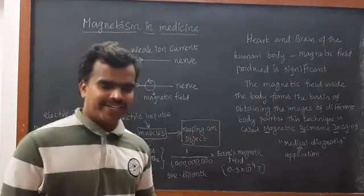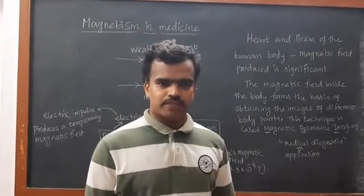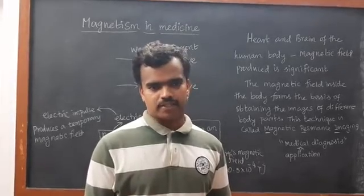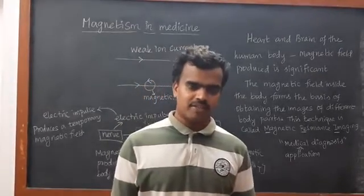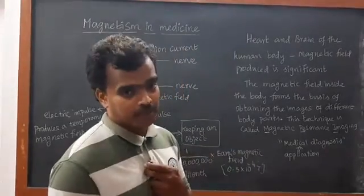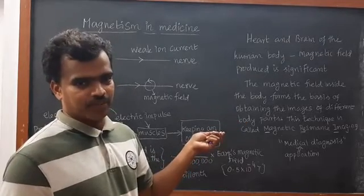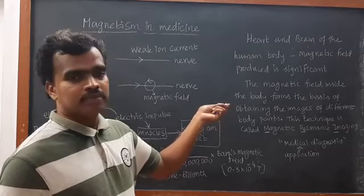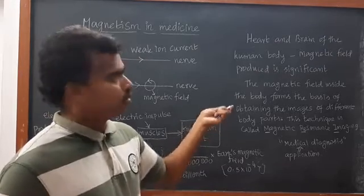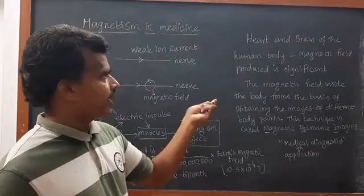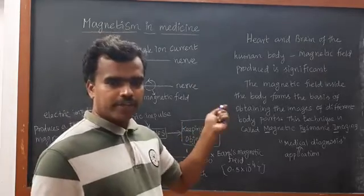Do you have any idea about which parts of the body produce magnetic fields? Yes — the brain and the heart. In those two organs, the magnetic field produced is significant. The heart and brain of the human body produce a significant magnetic field. So only for these two organs, we take an MRI scan — either heart or brain. And even these two organs are responsible for sending signals to other organs as well.